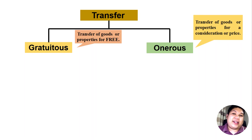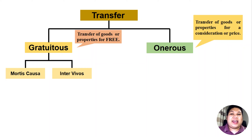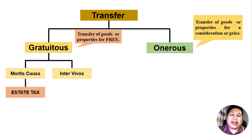Gratuitous transfer also has two types: mortis causa or inter vivos. These terms are Latin. Mortis causa refers to a transfer that only happens upon death. But when we say inter vivos, inter meaning within or during, and vivos means life — so a transfer inter vivos means the transfer happens during the lifetime of the donor. Mortis causa is upon death and is subject to estate tax under the Philippine tax system, while the transfer inter vivos is subject to donor's tax.